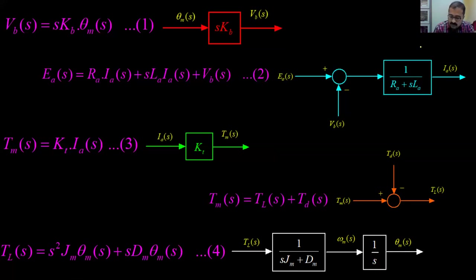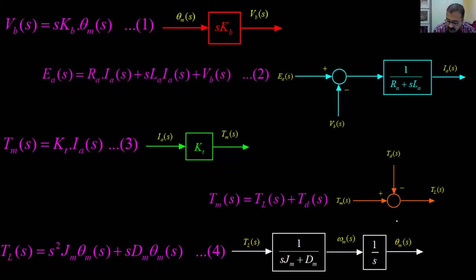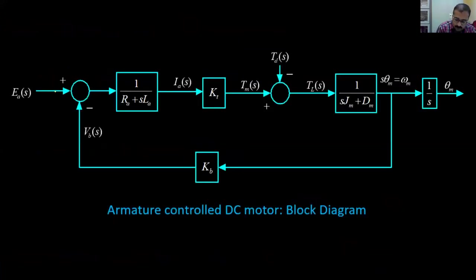The input is Ea(s). The first block gives Ia(s), which feeds into the Kt block to give Tm(s). At that point, Td(s) is subtracted to give Tl(s), which feeds into the mechanical load blocks to yield θm(s). Finally, θm(s) feeds back through s·Kb to produce Vb(s), which is subtracted from Ea(s). This gives the complete block diagram of the armature-controlled DC motor, with input Ea(s) and output θm(s).